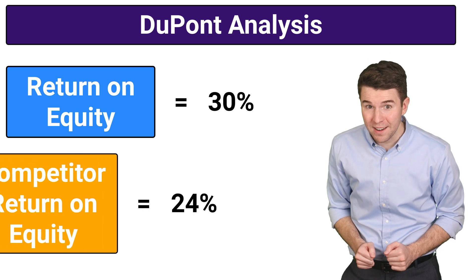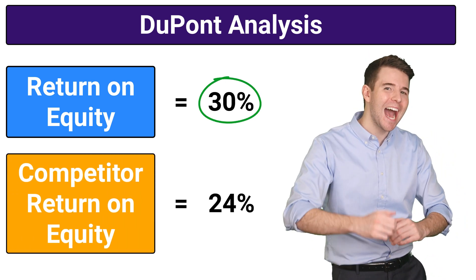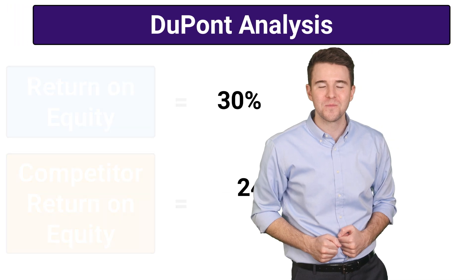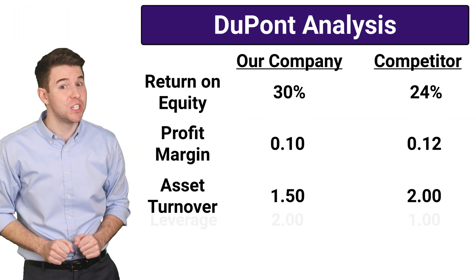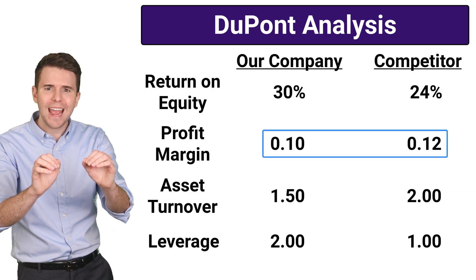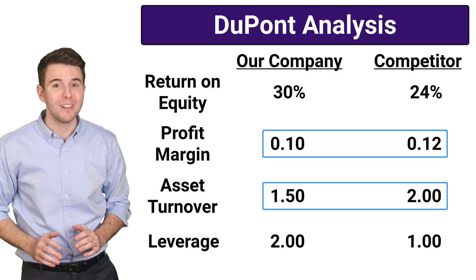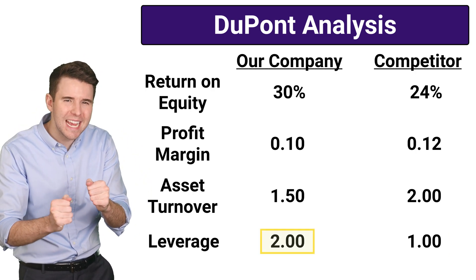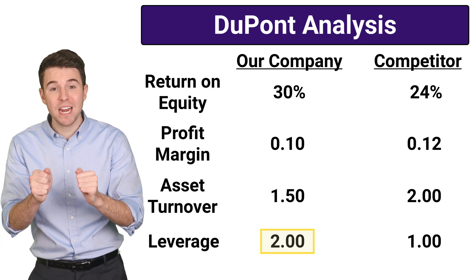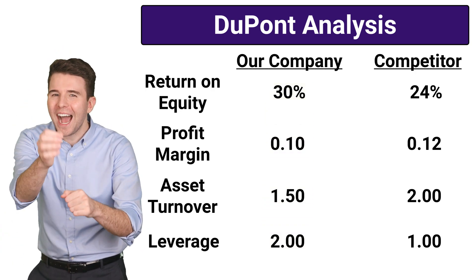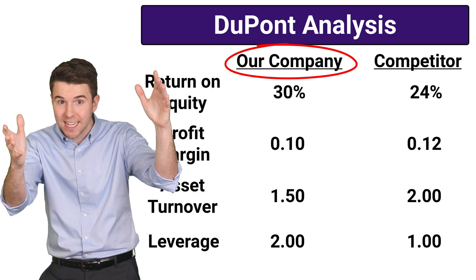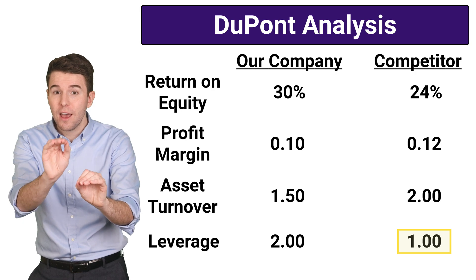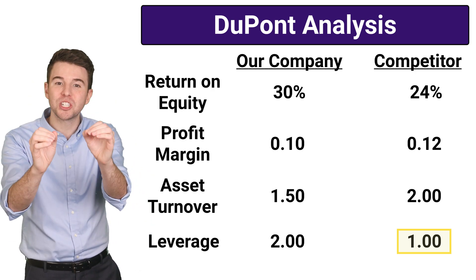Now let's compare this to a competitor. We see that our company has a higher return on equity, suggesting our company is more effectively using equity to generate profits. When breaking down the ratio into different components using DuPont, we see that our company has a lower profit margin and lower asset turnover, which is not preferable. However, our company has a higher leverage than the competitor. This means our company has taken a more aggressive approach to financing, which seems to be paying off with a higher return on equity. However, higher leverage means our company also has a potentially higher risk due to the obligation to repay debt, even during turbulent times. The competitor with lower leverage faces less risk, but also might be missing out on potentially higher returns.